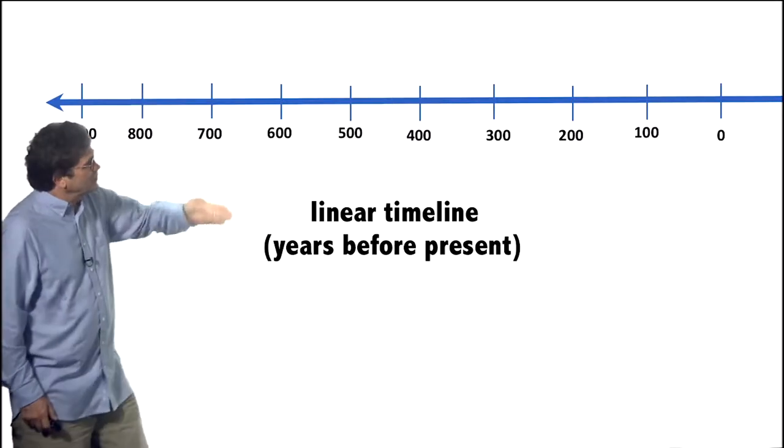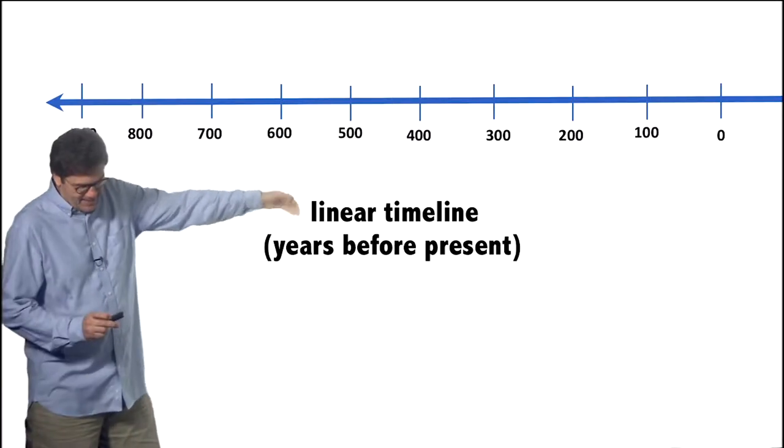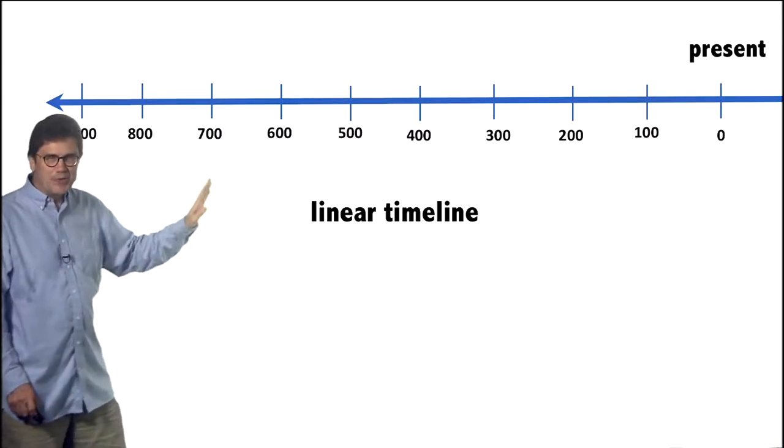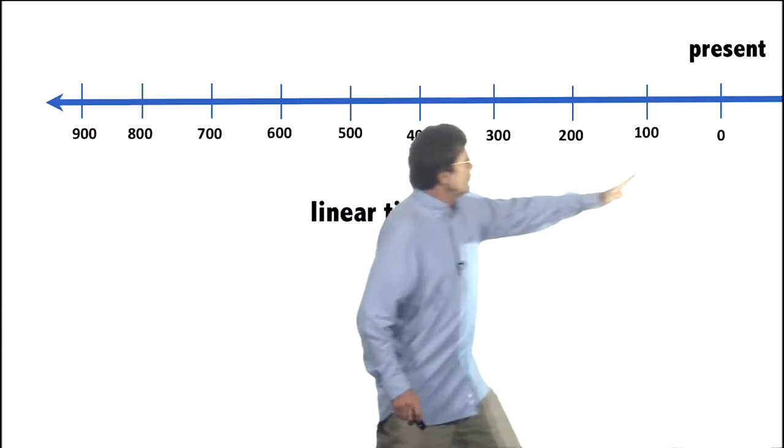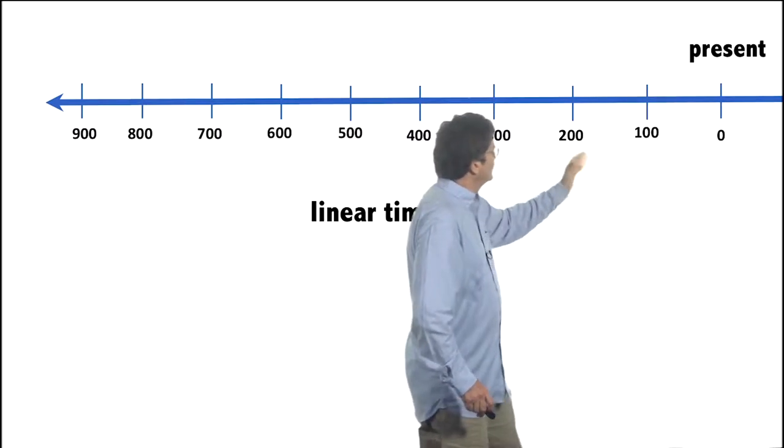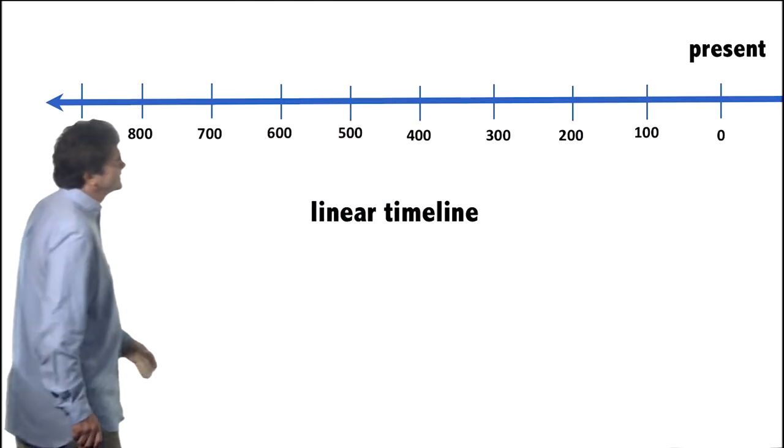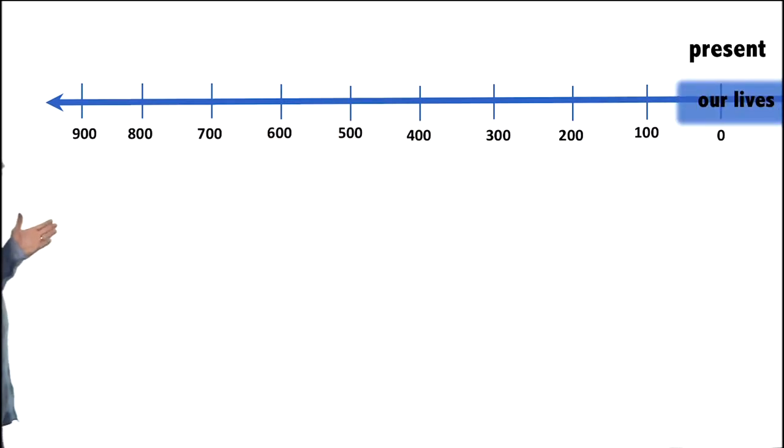Here is a timeline. Starts at zero and that's today and the present time. This is a linear timeline and you know that because from zero to a hundred, from a hundred to two hundred, there's the same number of years between each one of these tick marks. And that's nice. Our lives are here.